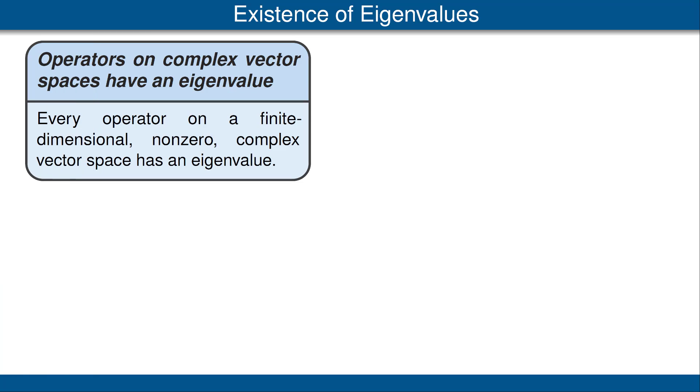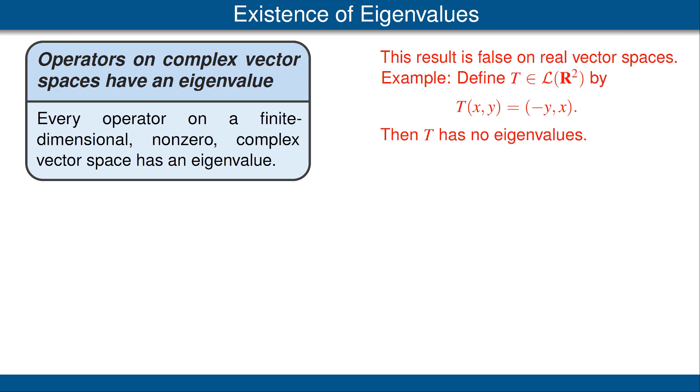Now we come to one of the truly crucial results in linear algebra. This result states that every operator on a finite-dimensional, non-zero, complex vector space has an eigenvalue. Before we get to the proof, let's note that this result is false on real vector spaces. We've seen an example previously. Specifically, if T is a linear operator on R2 defined by T of x comma y equals minus y comma x, then T has no eigenvalues. Because this T operates on a real vector space, eigenvalues by definition must be real.